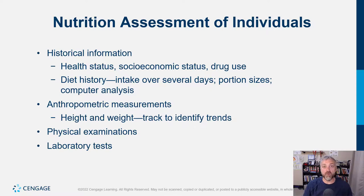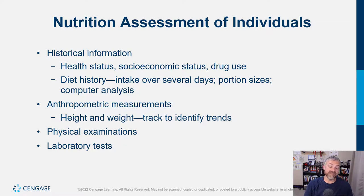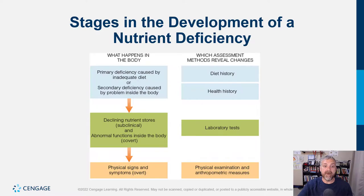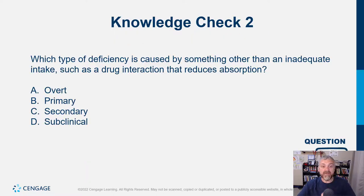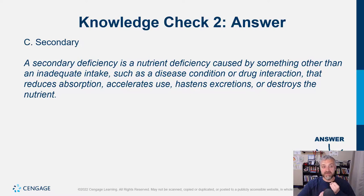Anthropometric measurements — things like height and weight — that's how you determine BMI, for example, which we'll cover later. Waist circumference is going to be a really big deal. Physical exam: looking for signs of deficiencies or toxicities. And lab tests: if you want to know if someone needs more vitamin D, the simplest thing to do is test their blood levels. If you do a diet history, a health history, run some lab tests, and examine a patient, you can learn an awful lot about nutritional status. A primary deficiency is when you're not consuming enough of something. A secondary deficiency is when you're consuming enough of it, but it's not being properly digested, absorbed, or stored.